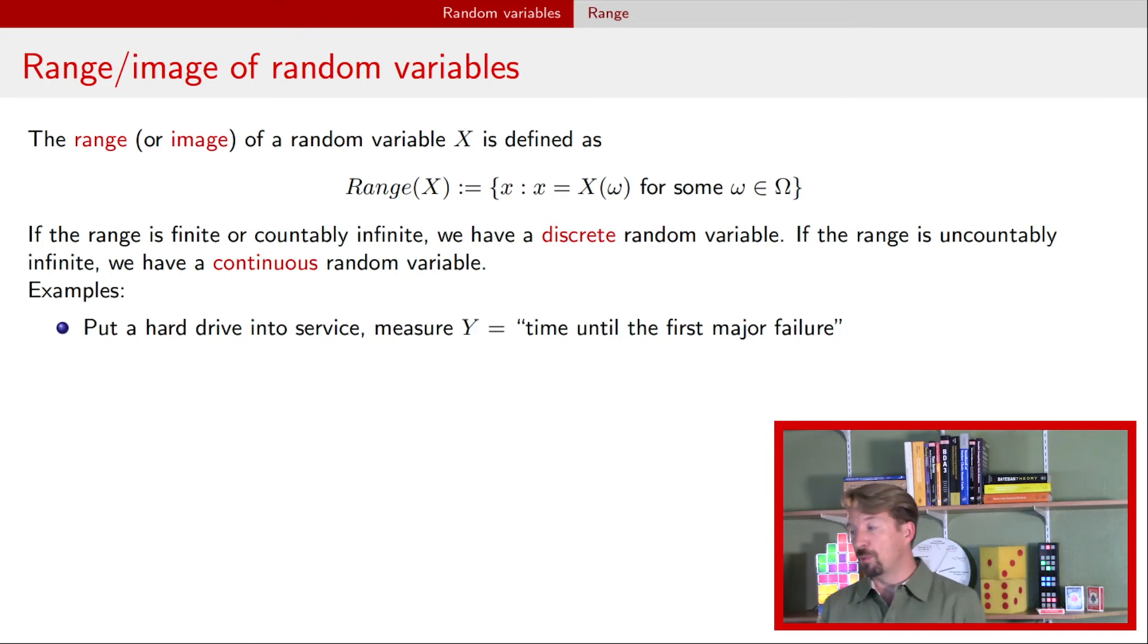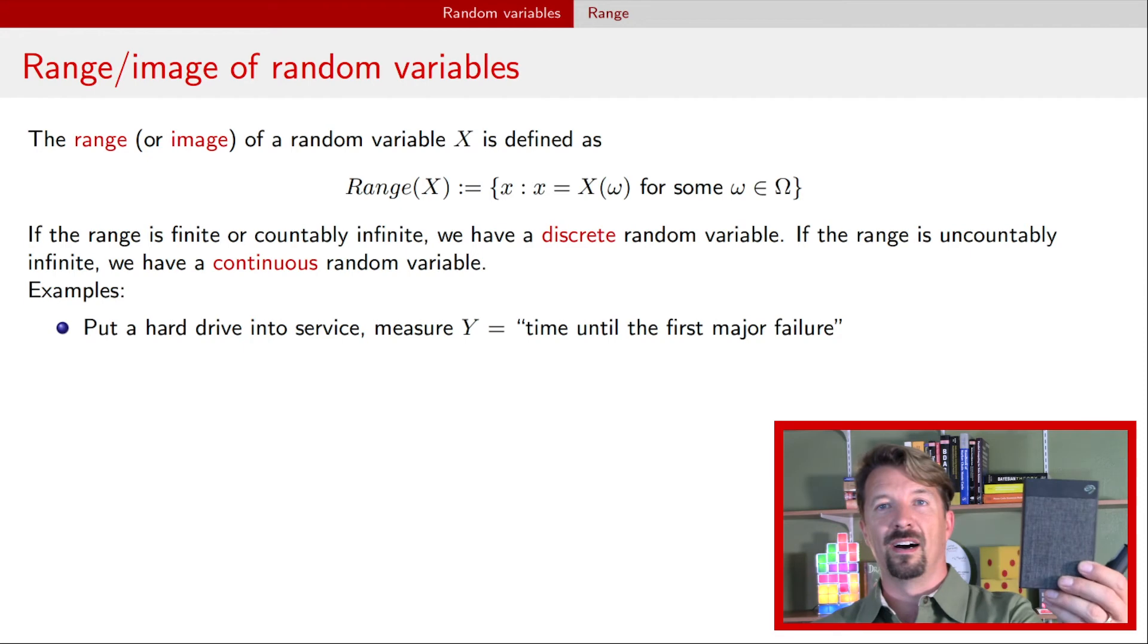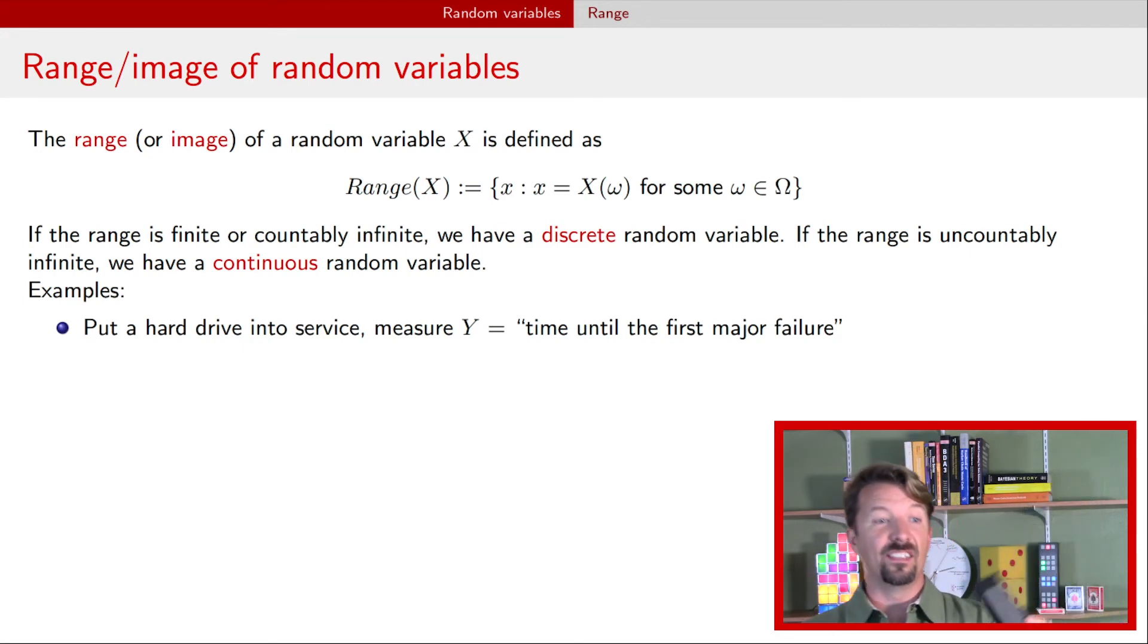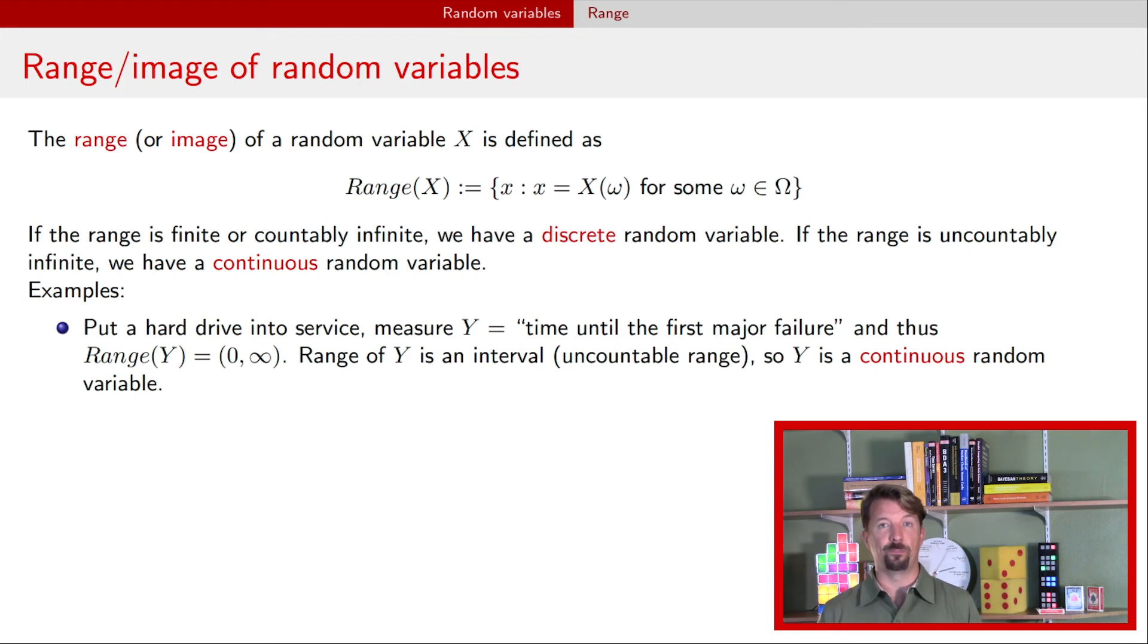Here's some examples. We put a hard drive into production and we just record how long it lasts in production until it has a major failure. What are the possible values for this random variable that we're calling Y? It's just a time until this major failure. Well, it could fail almost immediately, so anything just greater than zero, but it could run for a long, long, long time. And there's really sort of no upper limit to how long it could run. Really any value between zero and infinity is a reasonable value for this failure time for this hard drive. So the image or the range for Y here is the interval zero up to infinity. Because it has an interval, that means this random variable has to be a continuous random variable.